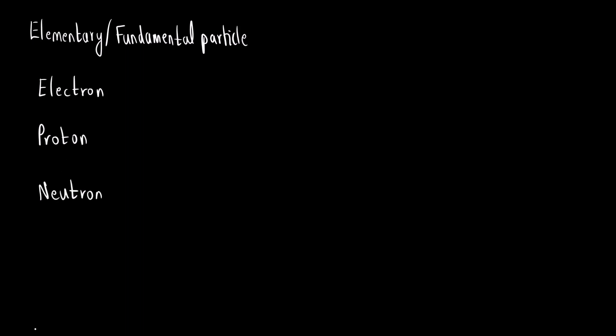Let us first write down their symbols. Electron is written as E, proton is P and neutron is N. If there is any element X, what is the general notation? As a superscript we write A, A is the atomic mass. This we had already seen in the previous video and Z is the atomic number or here we might refer it to as charge.